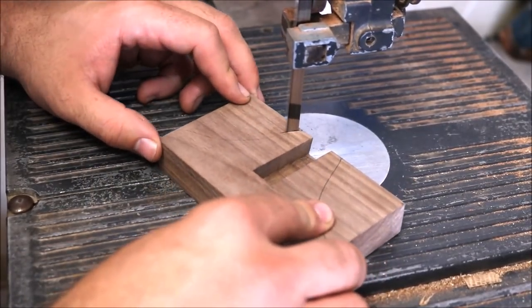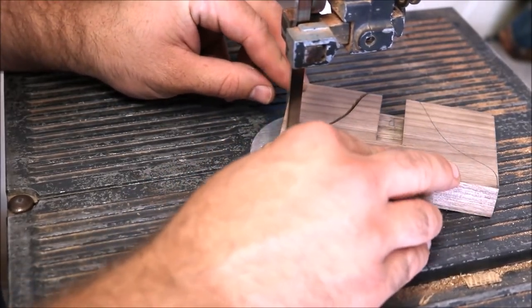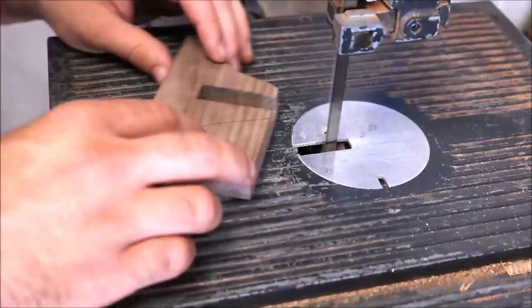I left that little side piece square because I figured it would make it easier cutting out that dovetail, so now I'm over at the bandsaw and I'm cutting out the shape that I want.